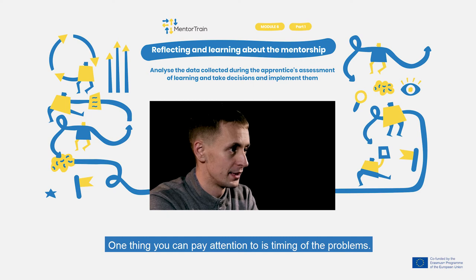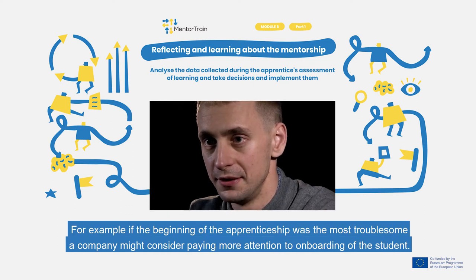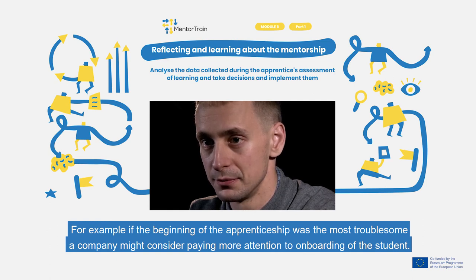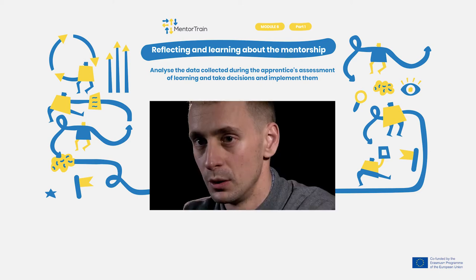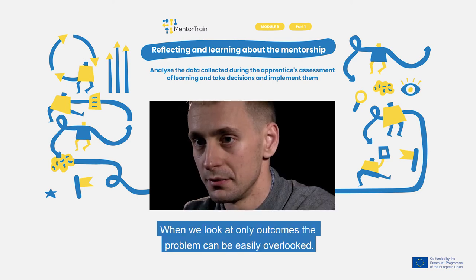One thing you can pay attention to is the timing of the problems. For example, if the beginning of the apprenticeship was the most troublesome, a company might consider paying more attention to onboarding the student. Often, the diary brings to light some small details that might be important to an apprentice but overlooked by an experienced worker. When we look only at outcomes, the problem can be easily missed.